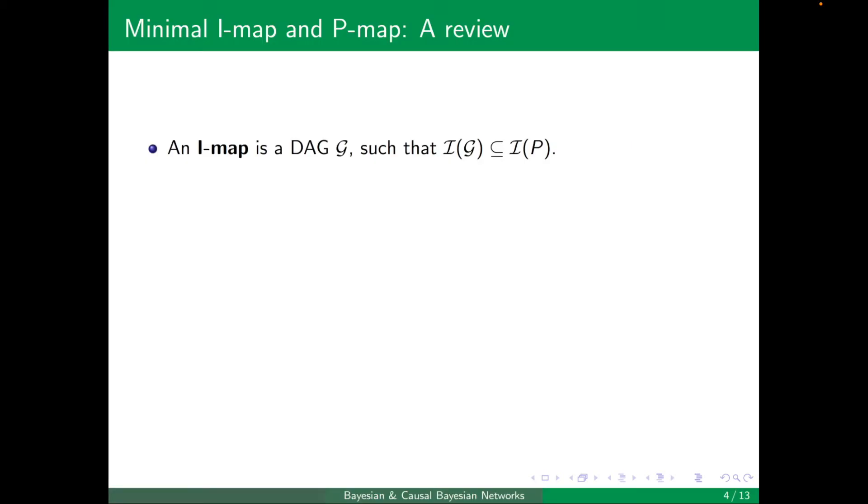To recall, an I-map is a DAG G such that I(G) is a subset of I(P). So all the conditional independencies, the global conditional independencies imposed by G, are a subset of I(P), or they are basically included in the distribution.